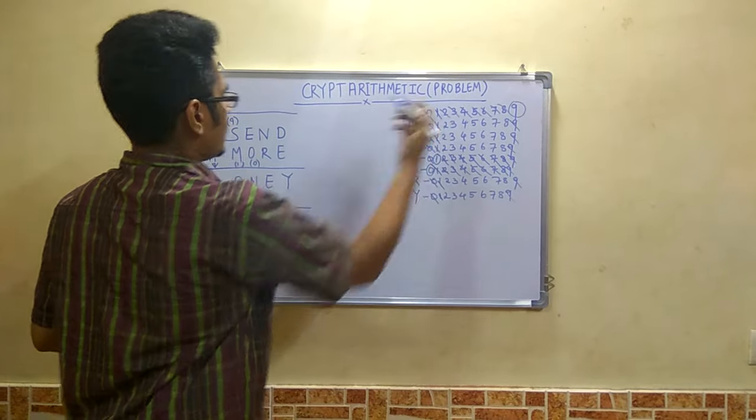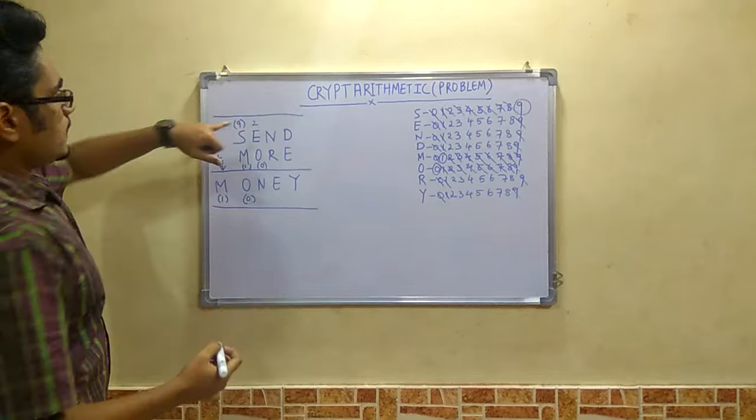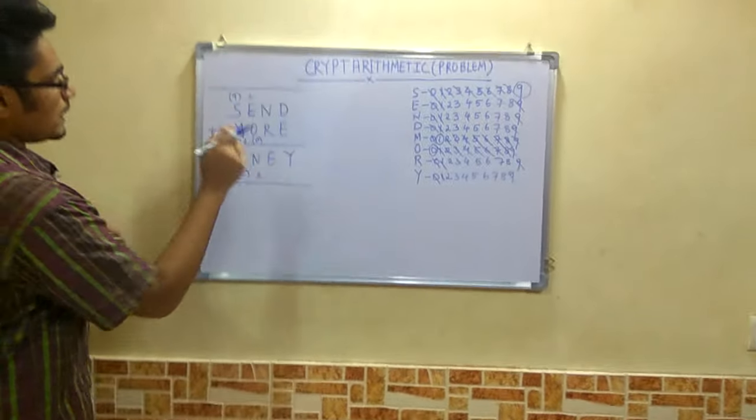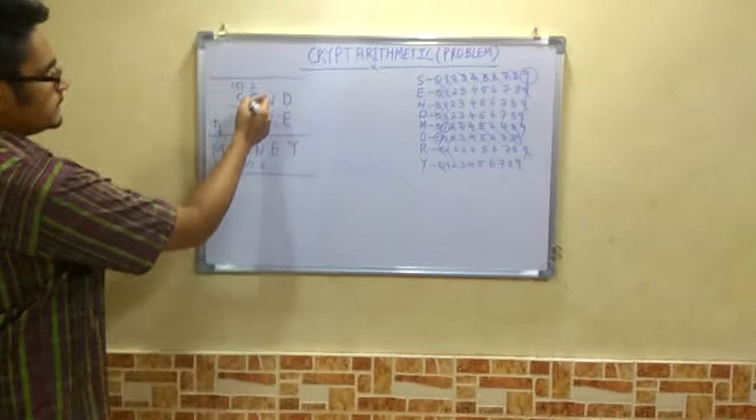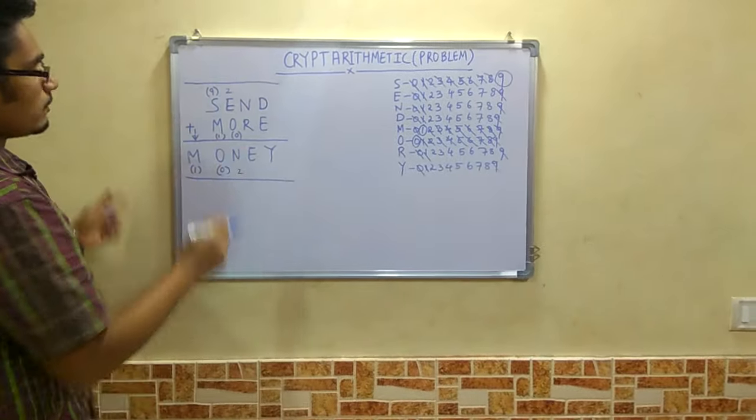Now how will you assign this? Now we will start with 2. If you assign 2 to E, then 2 plus 0 gives you 2. But each alphabet can take only one single digit. So E cannot be. If E is 2 then N cannot be 2. N should be certainly some other value.